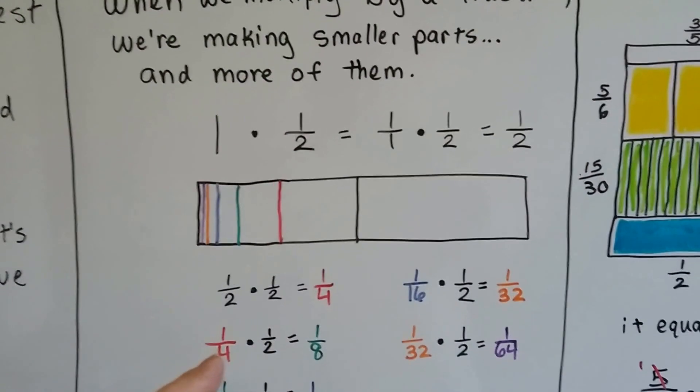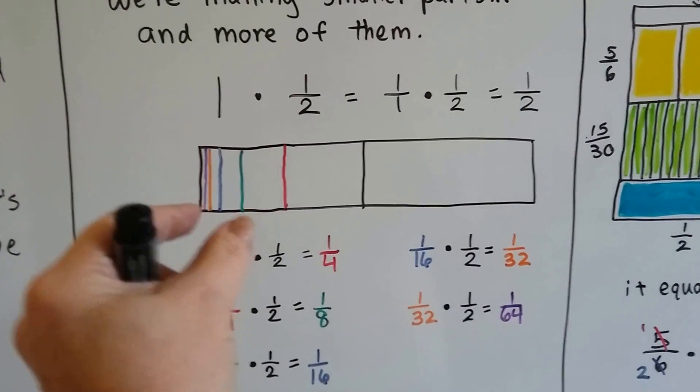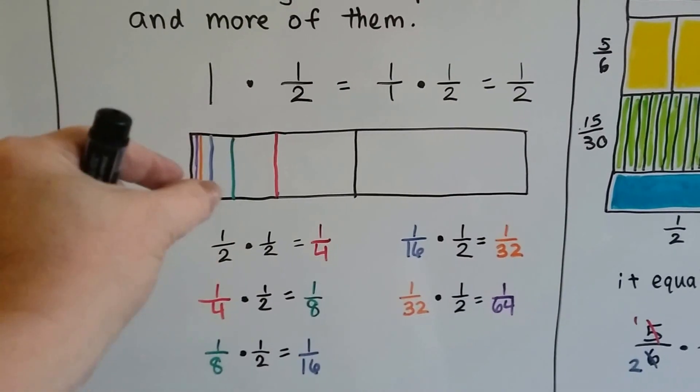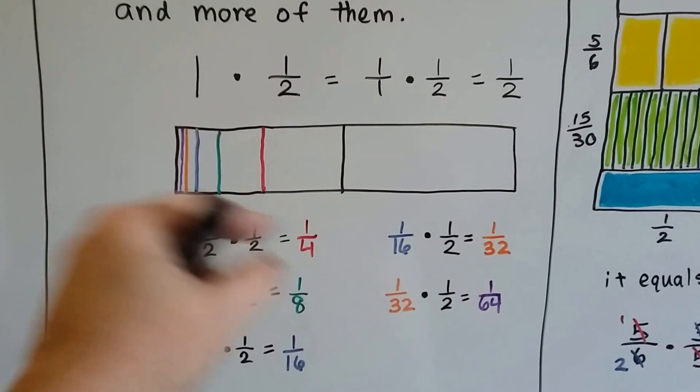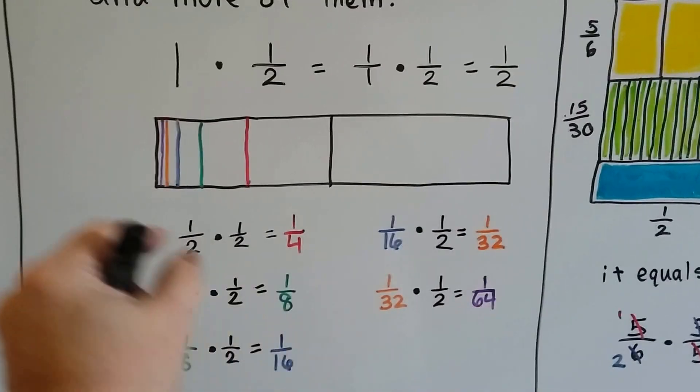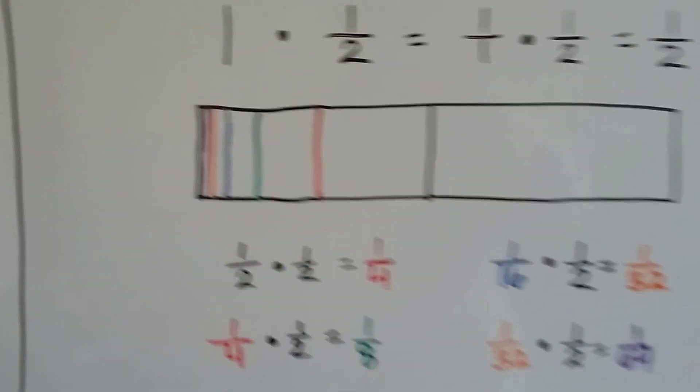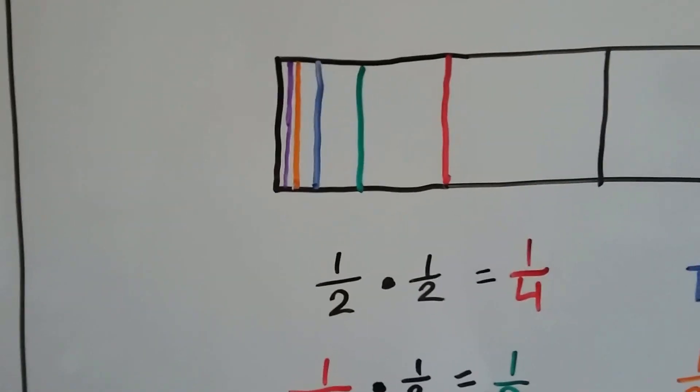If we multiply the fourth by a half, it becomes an eighth. The eighth by a half becomes a 16th. A 16th by a half becomes this little 32nd, and a 32nd by a half becomes this little 64th. This tiny little piece here in purple, can you see that? It's getting tinier and tinier.